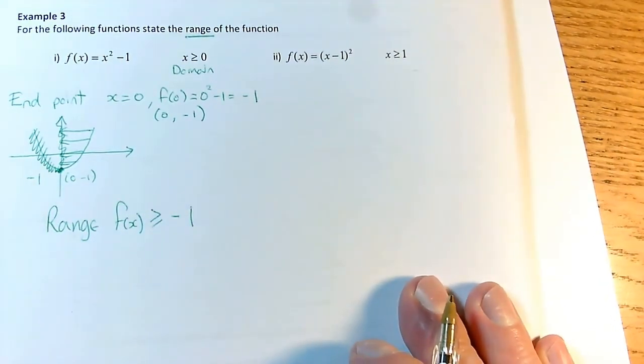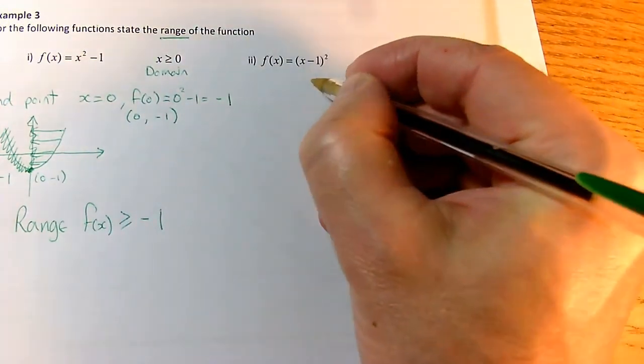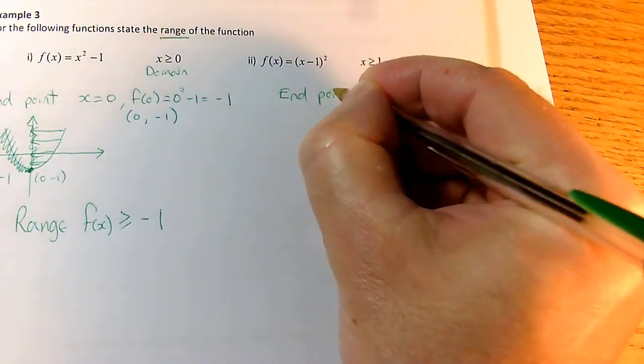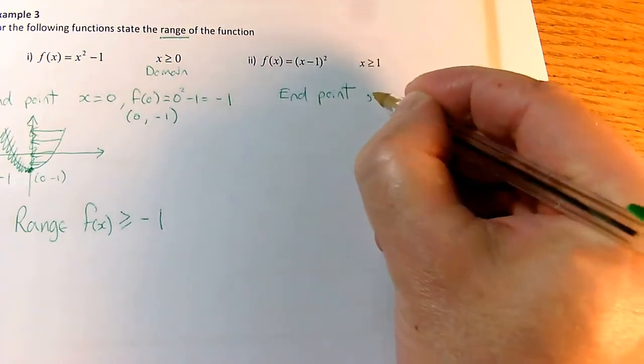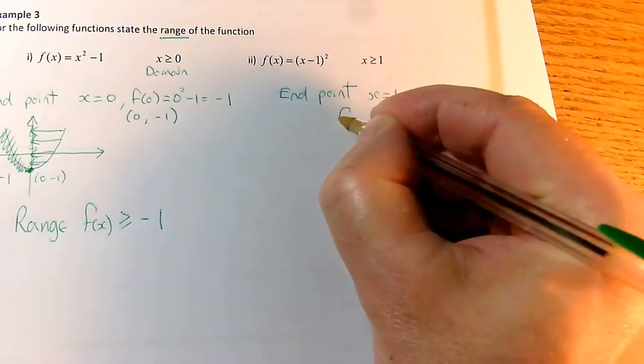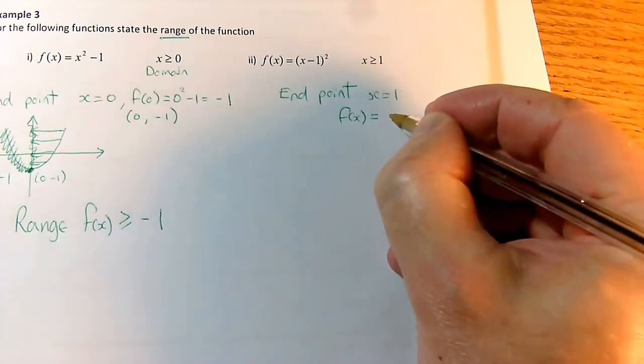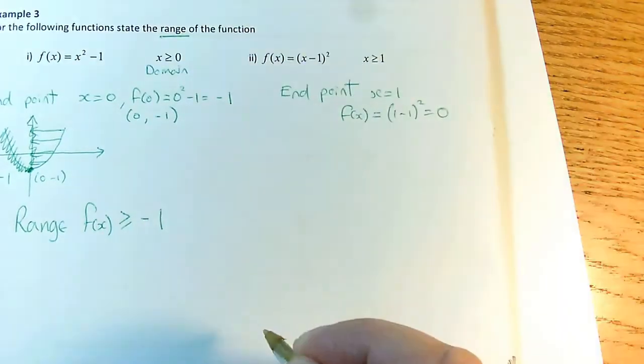So let's carry on applying that idea. Here we've got x is greater than or equal to 1, so I've got an endpoint again. My endpoint is going to be when x equals 1. And when x equals 1, f(x) equals (x - 1)², which is (1 - 1)², which is 0.